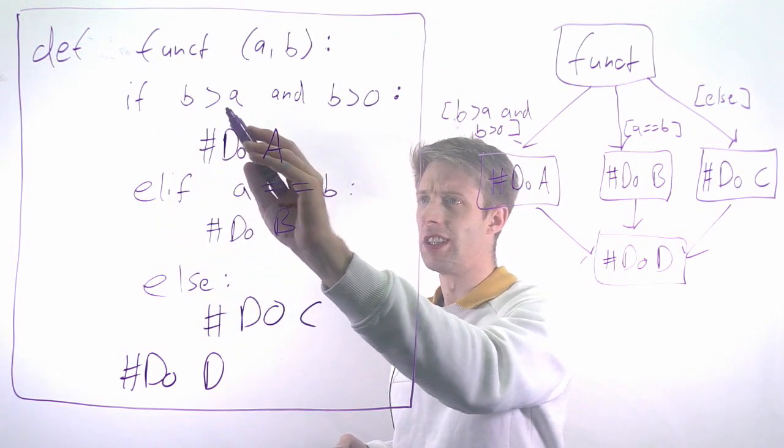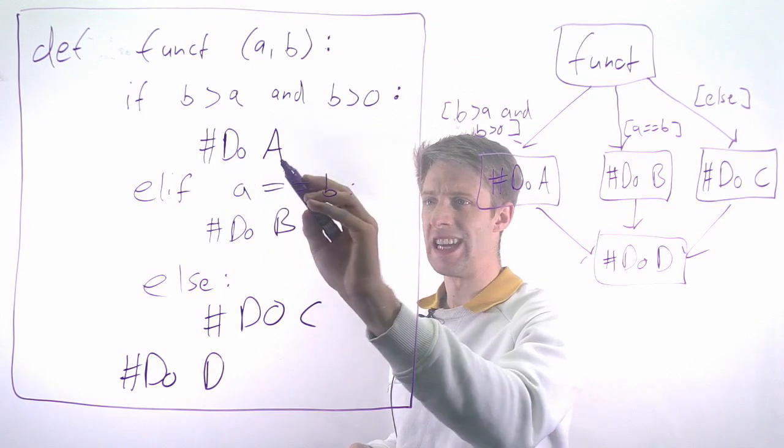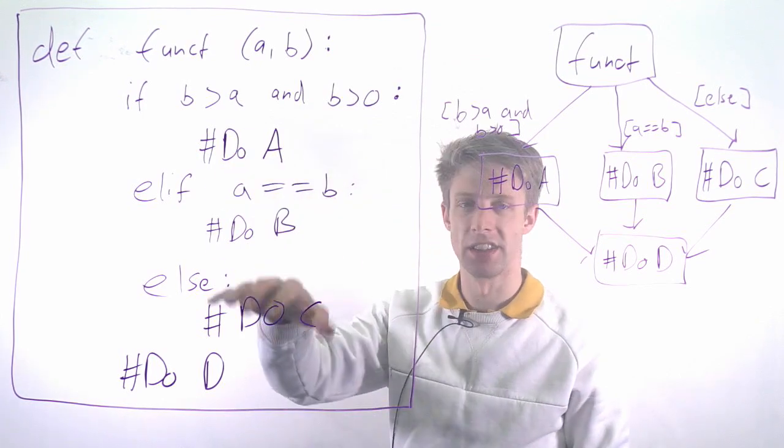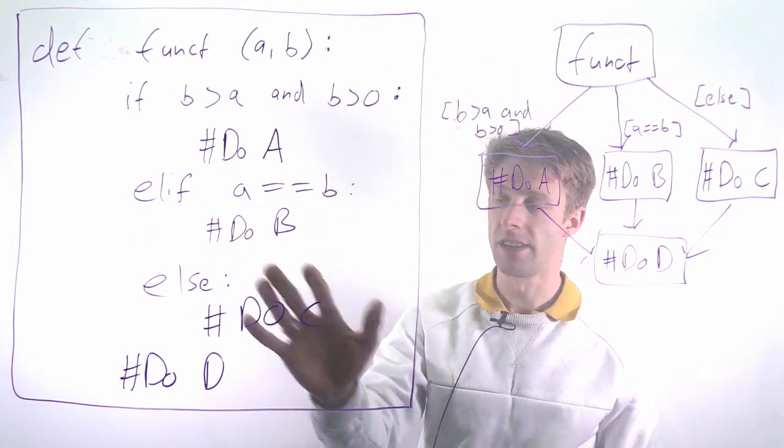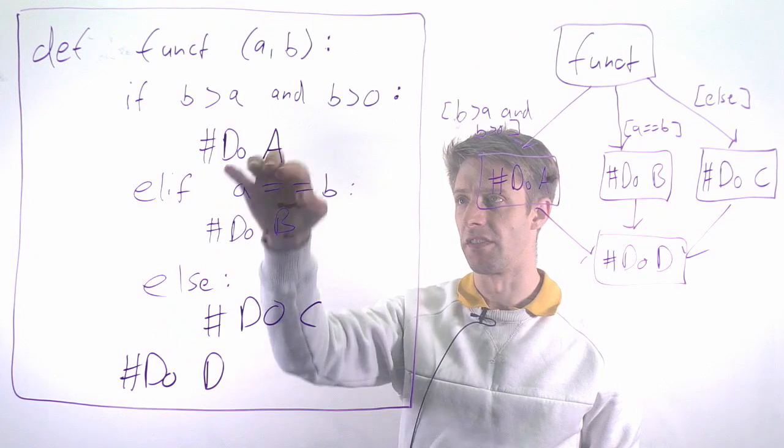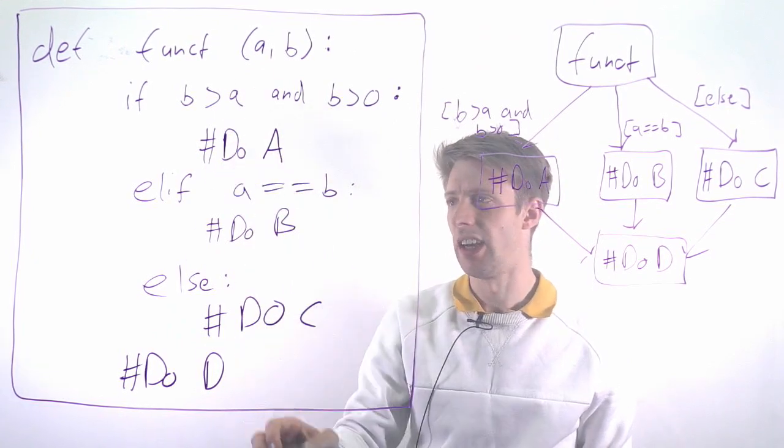I basically have a nested else-if structure. If b is larger than a and b is larger than 0, then some code A should be executed. If a equals b, then we should do B instead. Finally, if none of that is true, then we should do C.